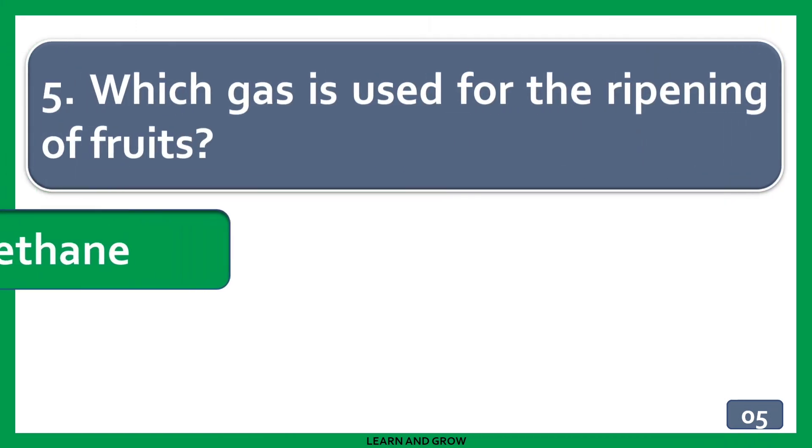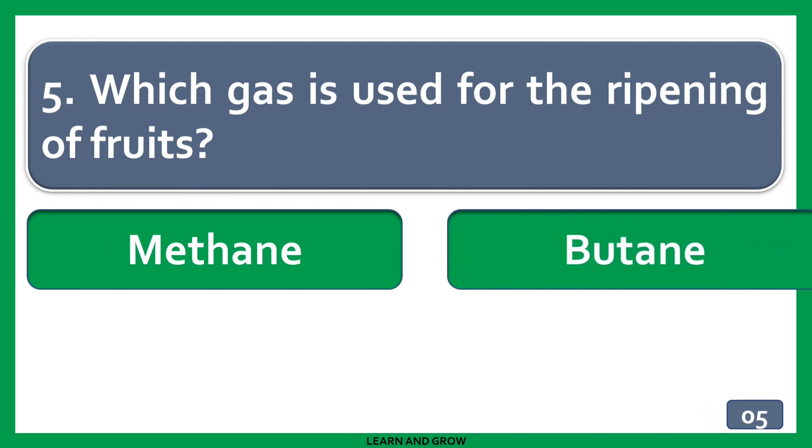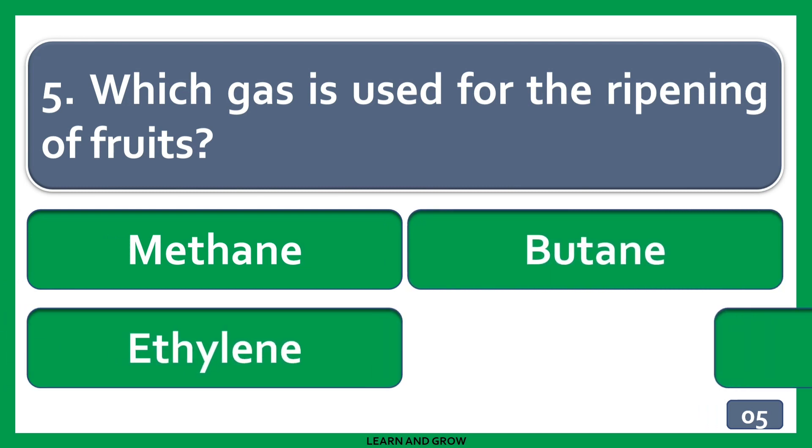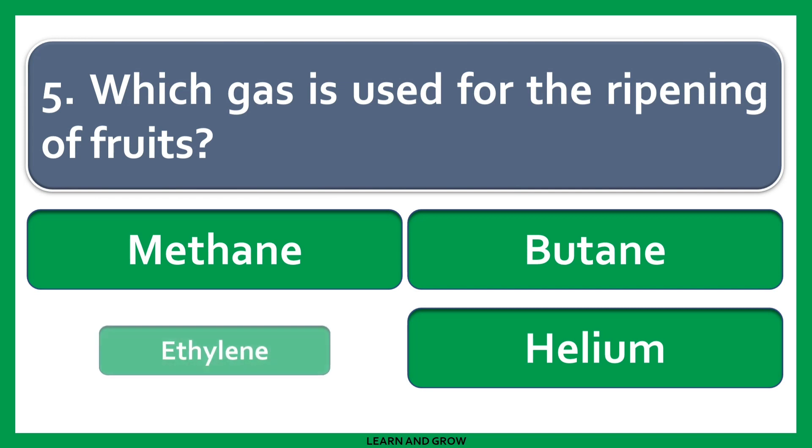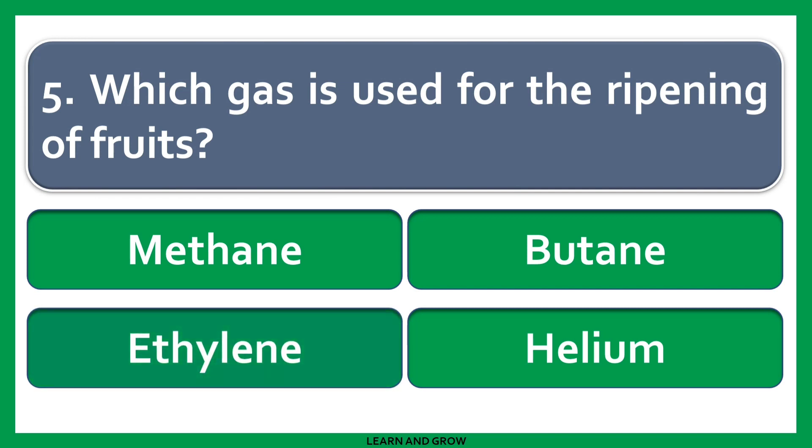Which gas is used for the ripening of fruits? The right answer is ethylene.